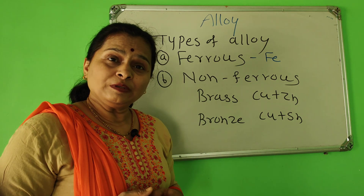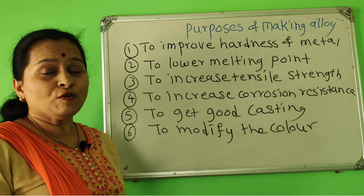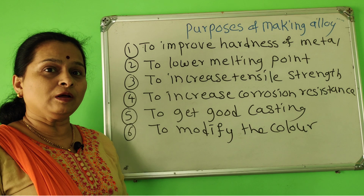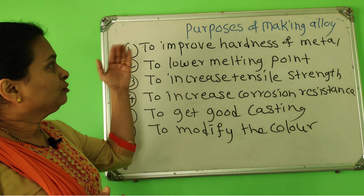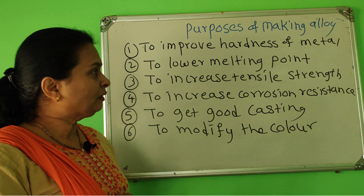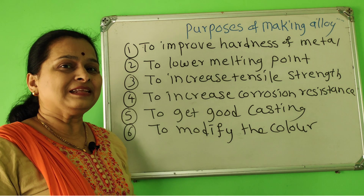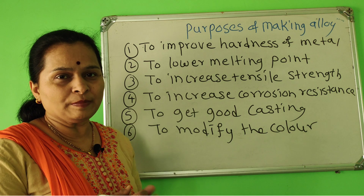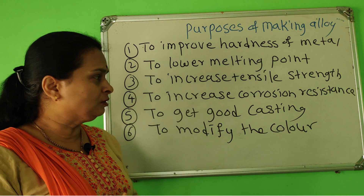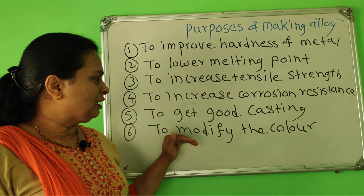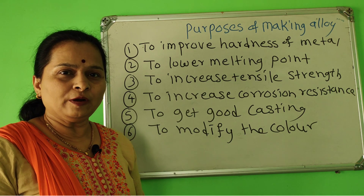What are the different purposes of making alloy? First purpose is to improve the hardness of metal. Second is to lower the melting point. Third is to increase tensile strength — that means load carrying capacity of metal. Then, to increase corrosion resistance. Then, to get good casting and to modify the color. These are the main purposes of making alloy.